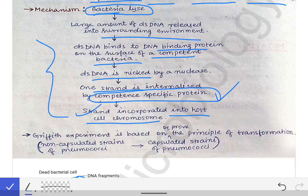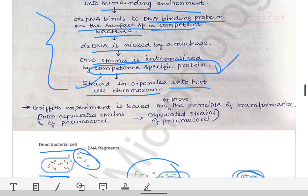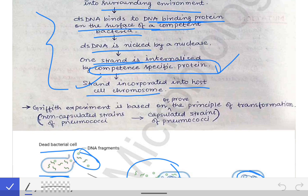Remember, it is only one strand of the free DNA in the surrounding that gets internalized into the live bacteria. Within the live bacteria it is duplicated and then incorporated into the host cell chromosome. You should remember the competence-specific protein and also the DNA binding protein on the surface of the bacteria, which helps in binding the double-stranded DNA to the live bacterial surface.